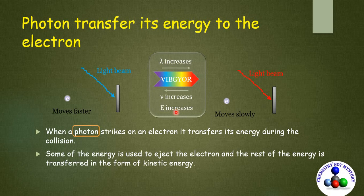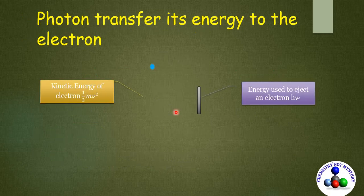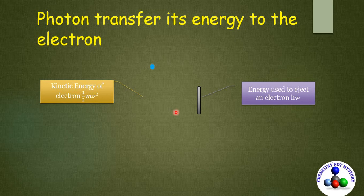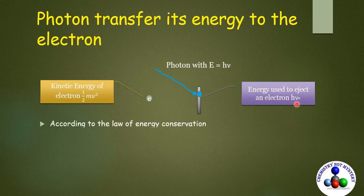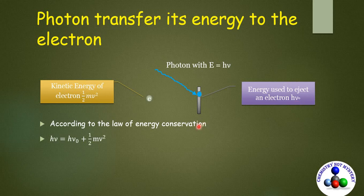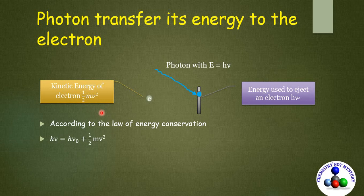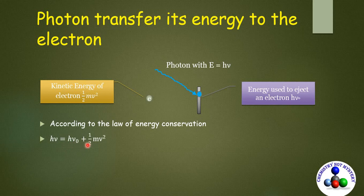As we know that the energy is directly proportional to the frequency. The energy of photon is given by hν and the energy used to eject an electron is hν₀. It is also called work function and the rest of the energy is transferred to the ejected electron in the form of kinetic energy. So the law of conservation of energy applies here too. So we get an equation: hν = hν₀ + ½mv².